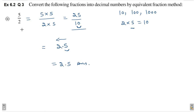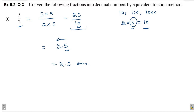Agar aap ke paas koi fraction hai jiske denominator mein 10, 100 ya 1000 nahi hai, but koi aisa number given hai jisko agar ham kisi or number ke saath multiply kareenge to humare paas 10, 100 ya 1000 aasakta hai. Jaise is case me humare paas denominator mein number tha 2. So, 2 ko agar ham 5 ke saath multiply kareenge to humare paas aajayega 10. So, usi number ke saath humane numerator and denominator ko multiply kar dhena hai, taaki us fraction ki actual value mein koi difference na aaye. Aur uske baad jab humare paas is type ki fraction aajayegi jiske denominator mein 10, 100 ya 1000 hoga, us fraction ko phir humane decimal number mein change kar dhena hai. This method is known as equivalent fraction method.